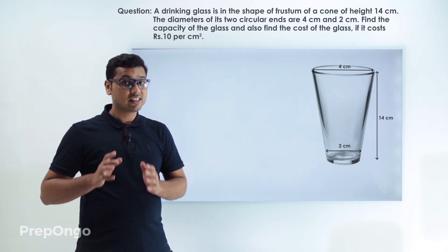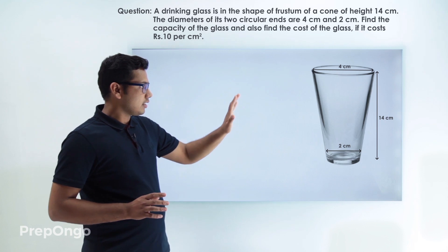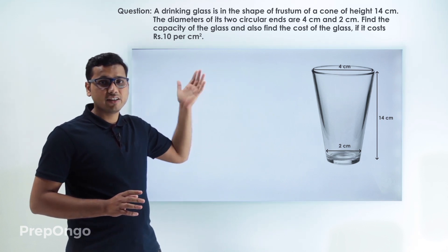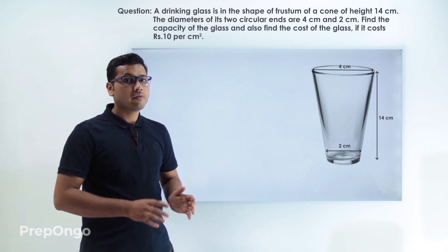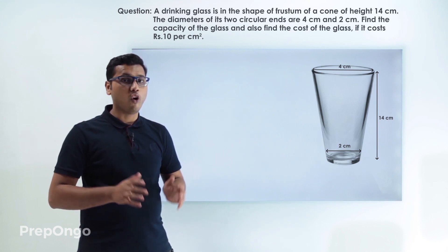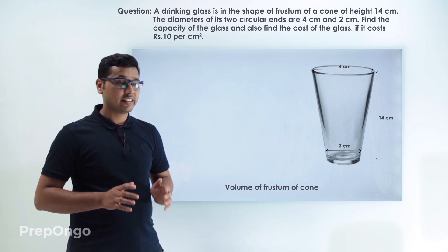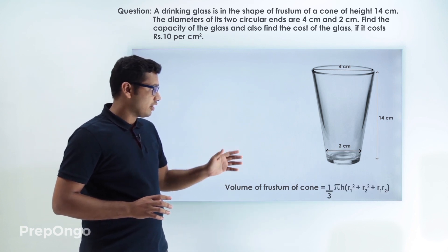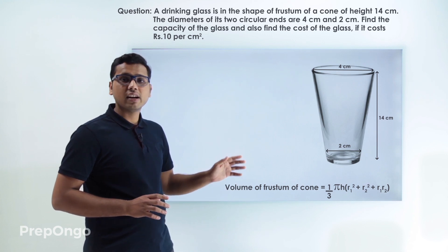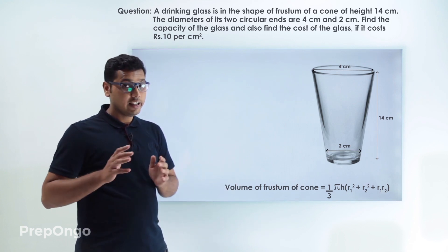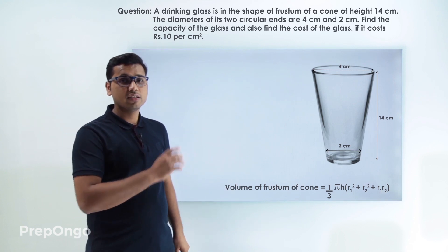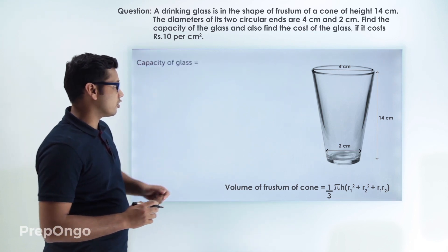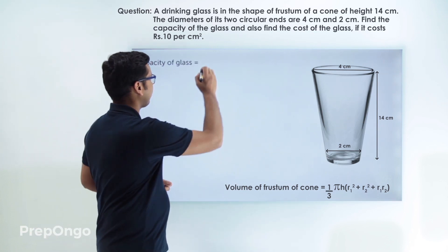Since this is a frustum of a cone and we have to calculate the capacity of this glass, we know the volume of frustum of a cone. It is one-third pi h into r1 squared plus r2 squared plus r1 r2. So we can easily find out the capacity of this glass. We just have to put in the values.